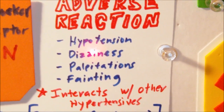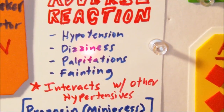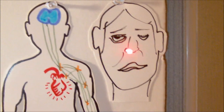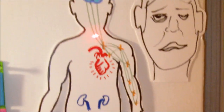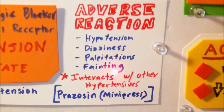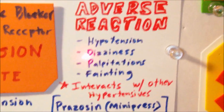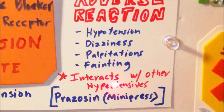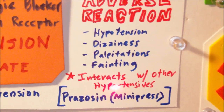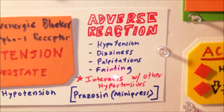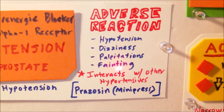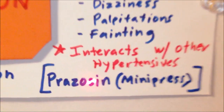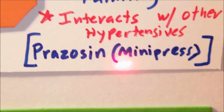We have to be careful when giving alpha adrenergic blockers. Since we know they cause hypotension, we need to ensure this drug doesn't interact with other antihypertensives or vasodilators, because that could cause further or severe hypotension in the patient. One of the most important alpha-1 adrenergic blockers you may encounter in the NCLEX exam is prazosin, also known as Minipress.